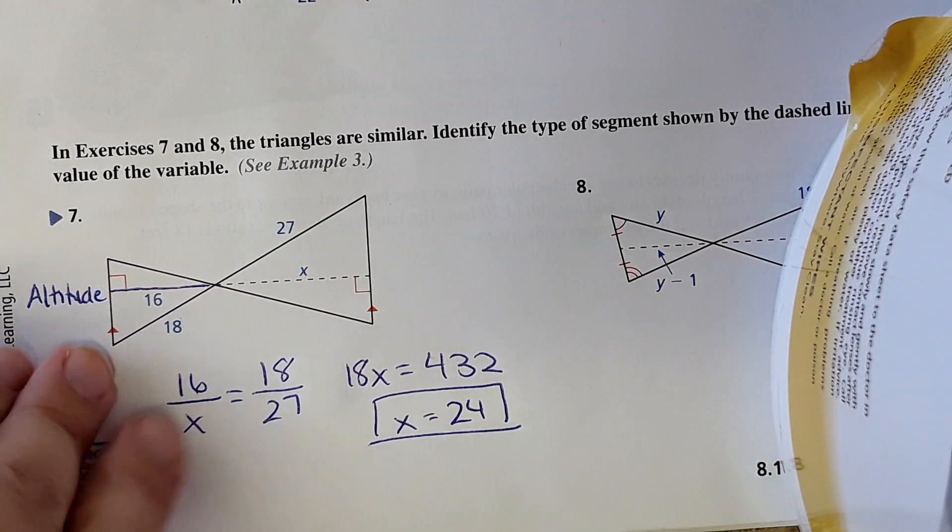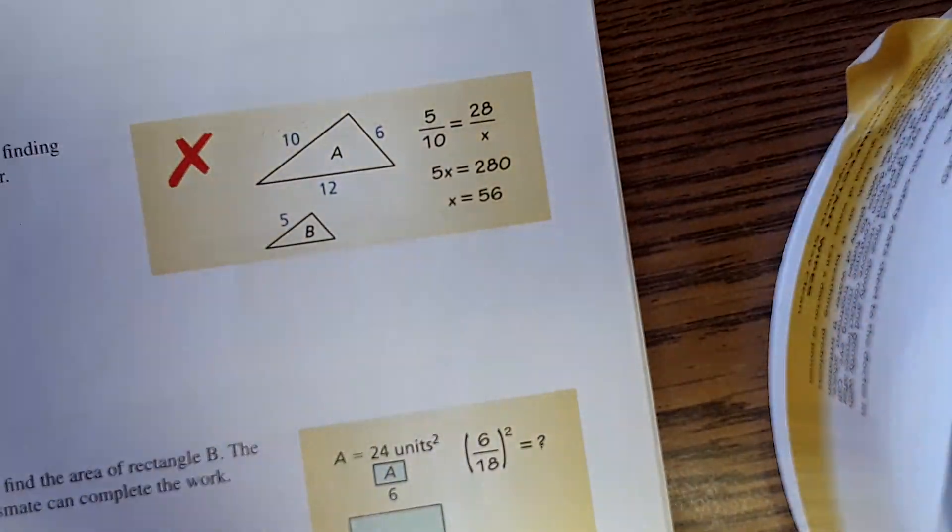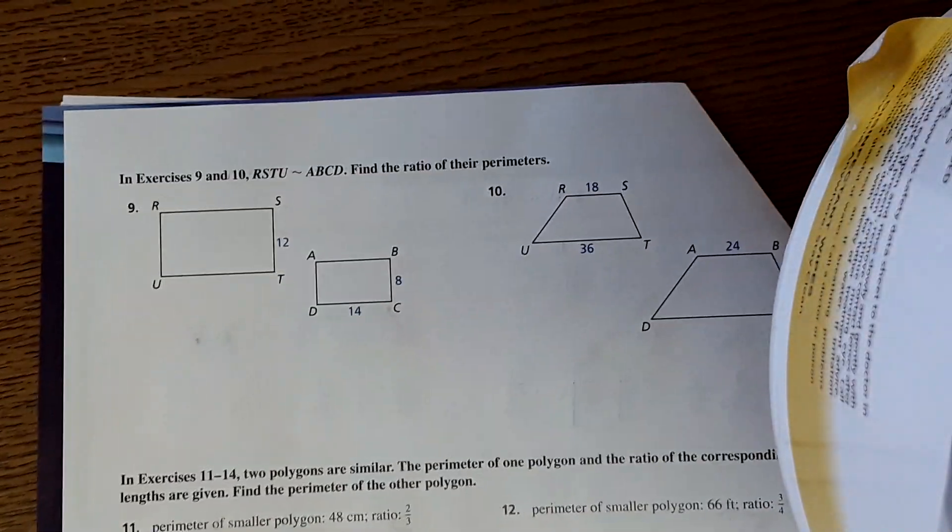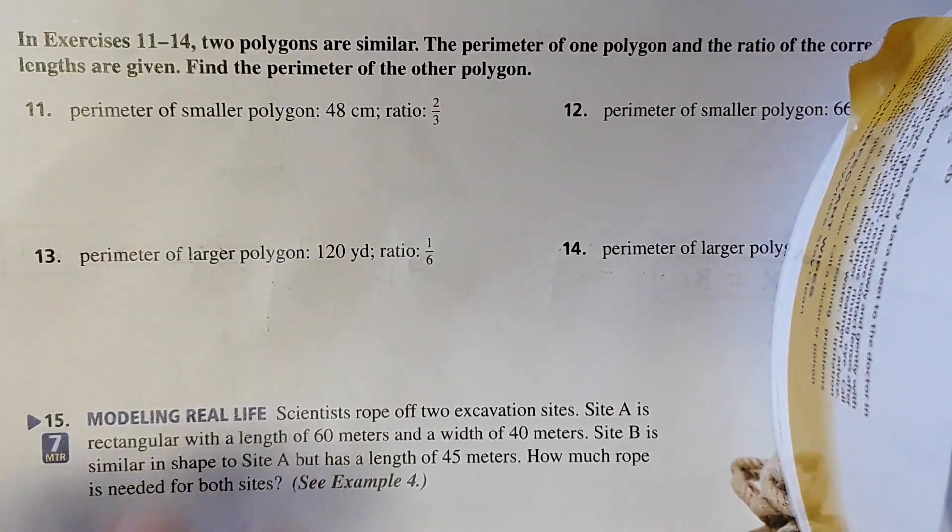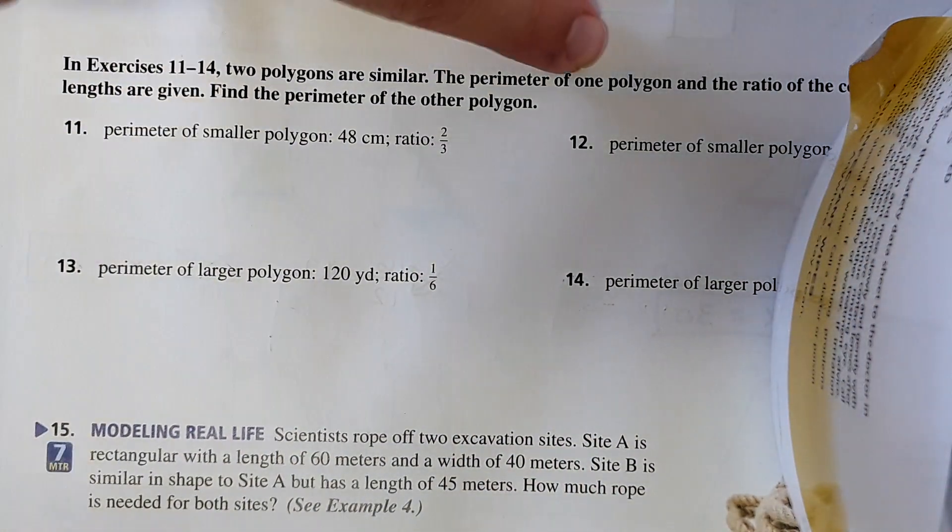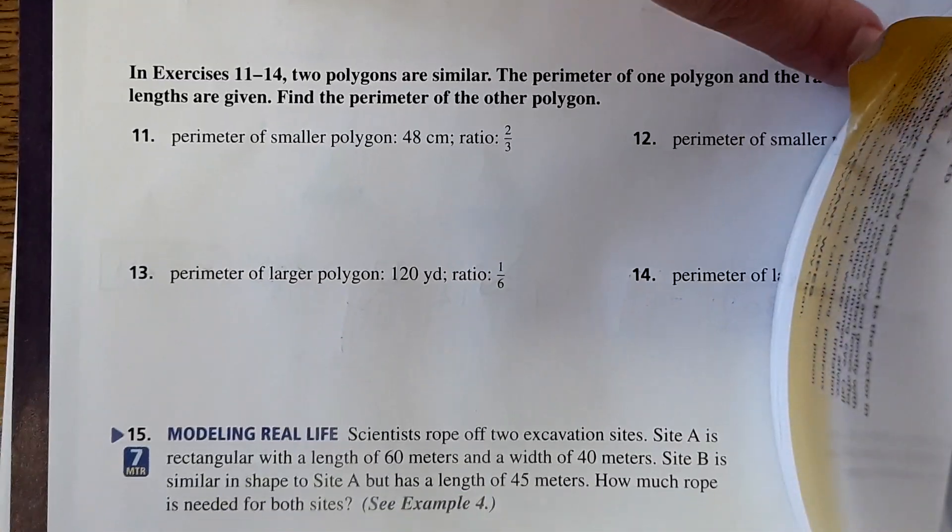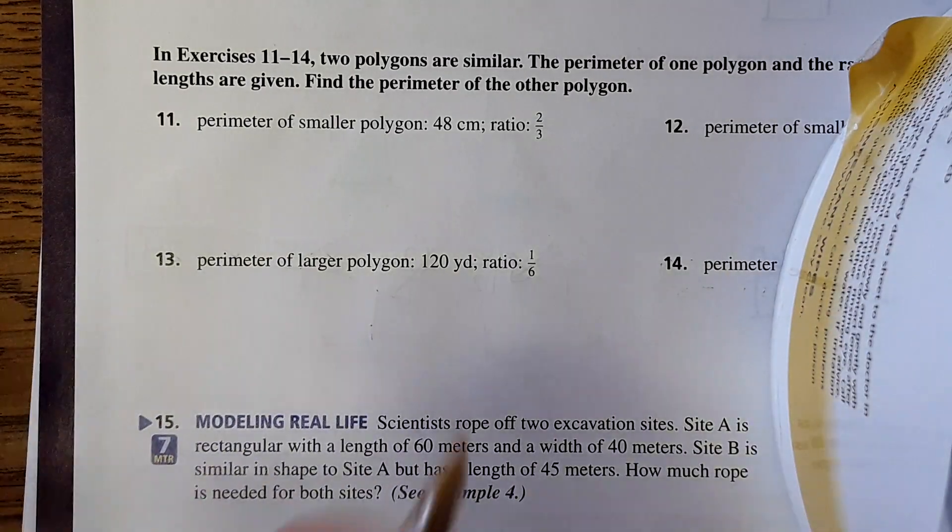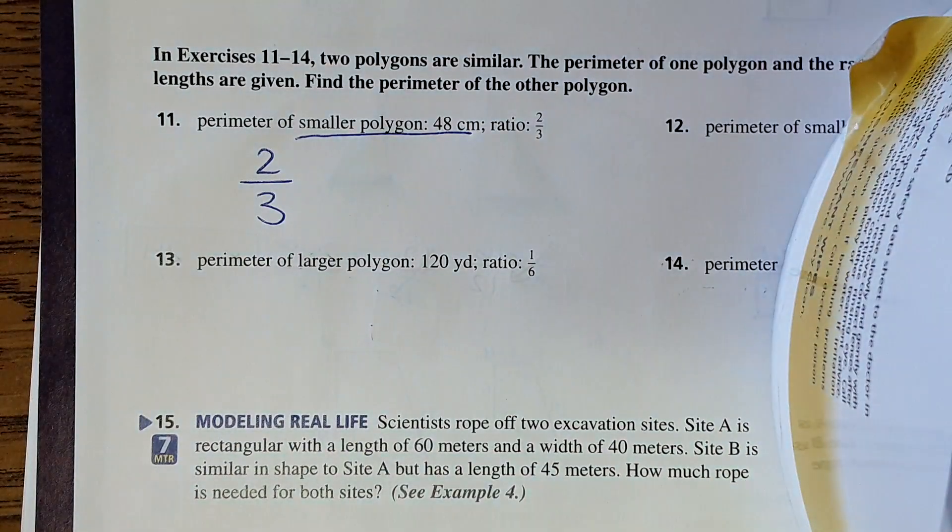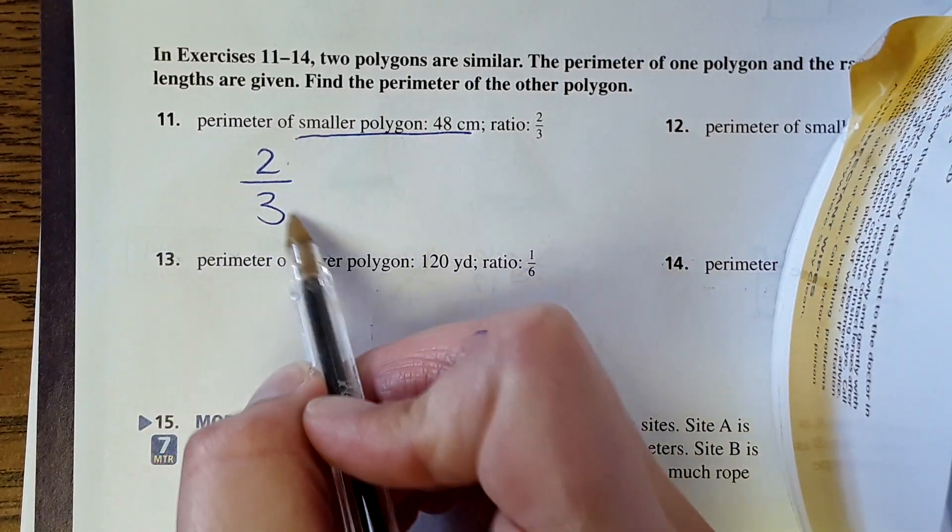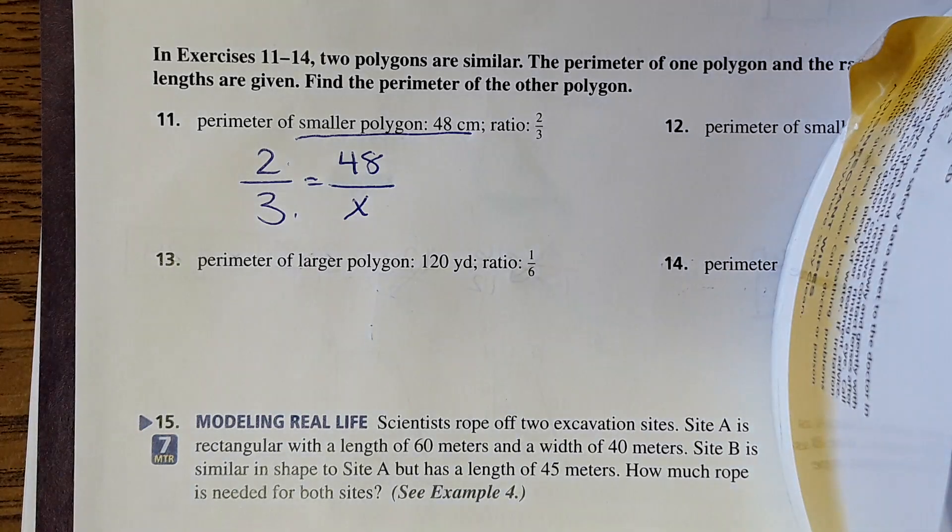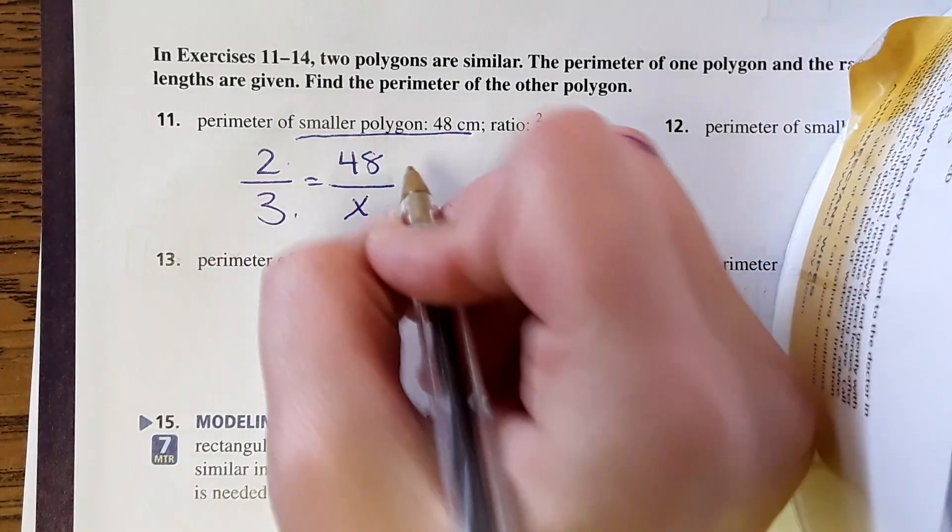Now we're going to move to the back and do a problem. One of the key points is that perimeter is also proportional, same proportion as side length. We're going to skip those top two and just go to number 11. Two polygons are similar, the perimeter of one polygon and the ratio of the corresponding side lengths are given, find the perimeter of the other polygon. It says the perimeter of the smaller polygon is 48 centimeters and it's a ratio of 2 to 3. So I'm going to write this ratio down, 2 to 3. The smaller one would be the 2, and the larger one would be the 3. I'll put 48 with the 2, and then we're solving for the larger. Then we solve using cross multiplication.